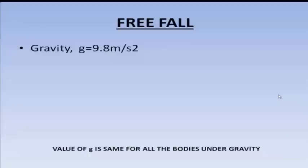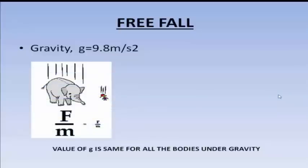The value of g will be the same for all bodies falling under gravity. We take an example of an elephant, which has a bigger mass, and a small boy who is falling, with a small mass. We have learned that g = F/M, that is force divided by the mass of the object. The mass of the elephant is more, so the force with which it comes down will also be more. When you divide the force by the mass — whether for the elephant or the boy — it will always be constant at 9.8 meters per second squared if they are freely falling.